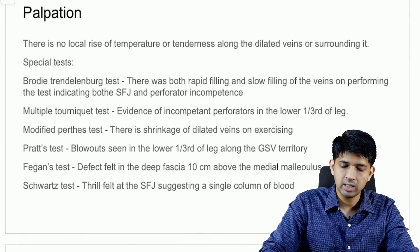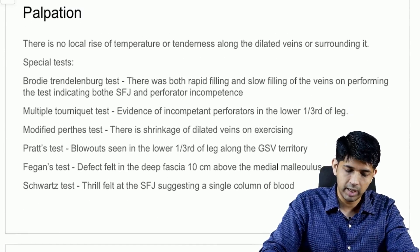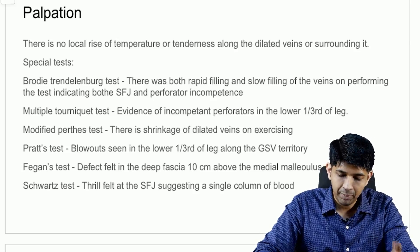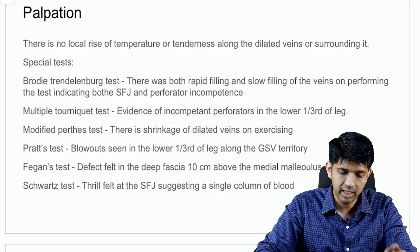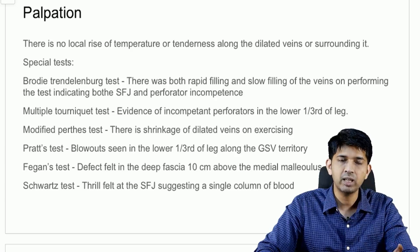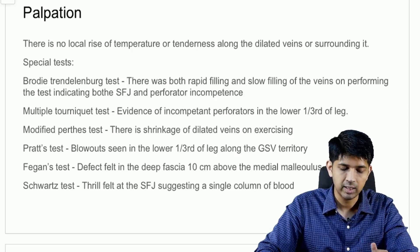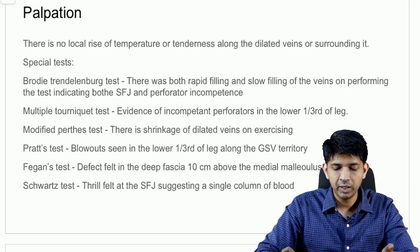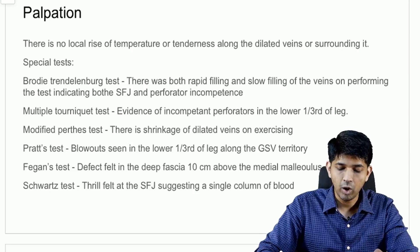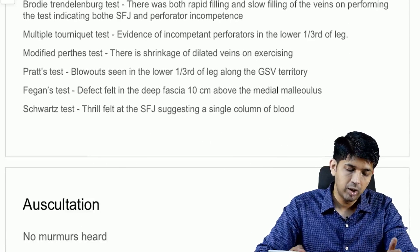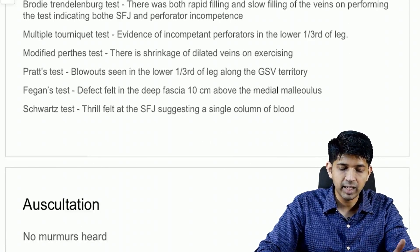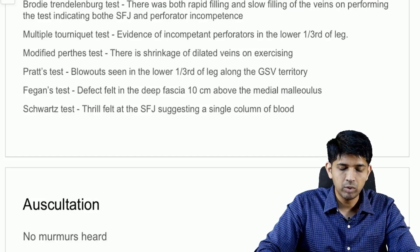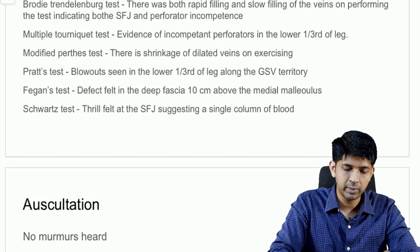There is no local rise of temperature or tenderness along the dilated veins. On the Brodie-Trendelenburg test, there was both rapid filling and slow filling, indicating that both the saphenofemoral junction was incompetent and there was perforator incompetence. On the multiple tourniquet test, there was incompetence of the perforators in the lower one-third. On the modified Perthes test, there was shrinkage of the dilated veins on exercising, indicating no DVT.